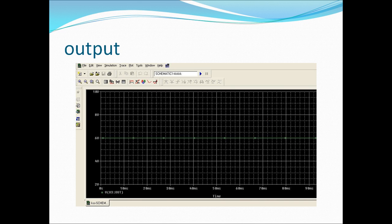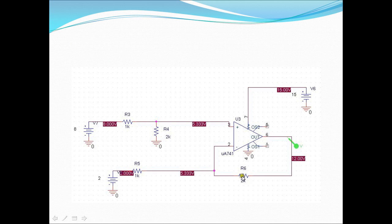Suppose if you change the resistance value. See here R6, this is R2 in the theoretical equations which I mentioned. Here we have done it as 2k.